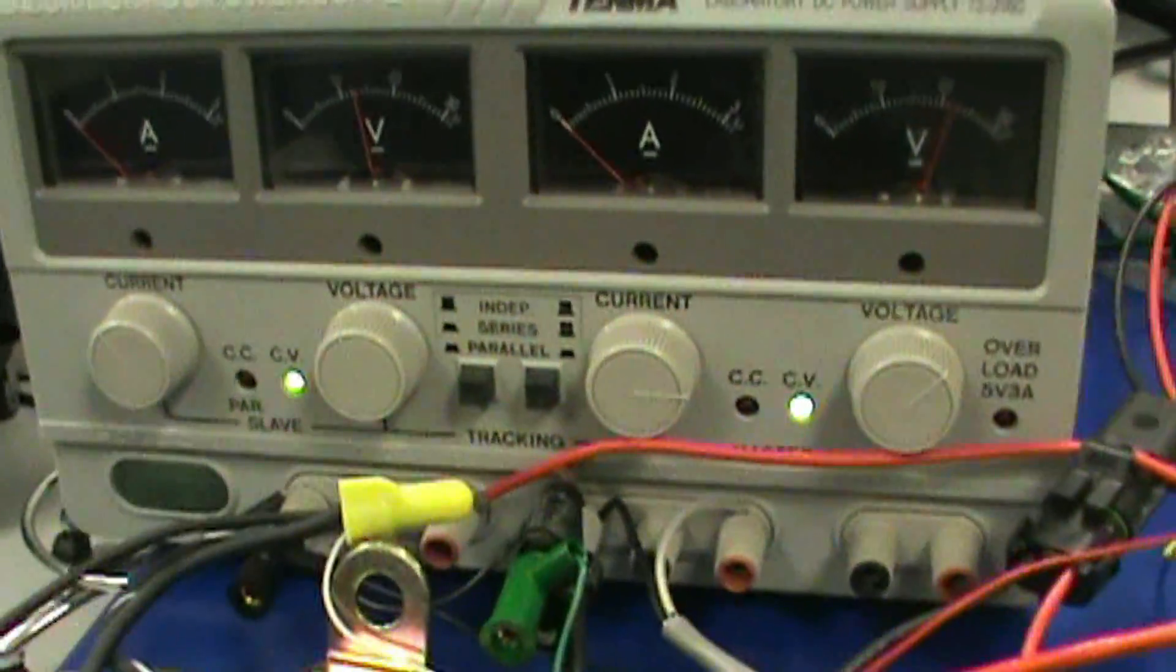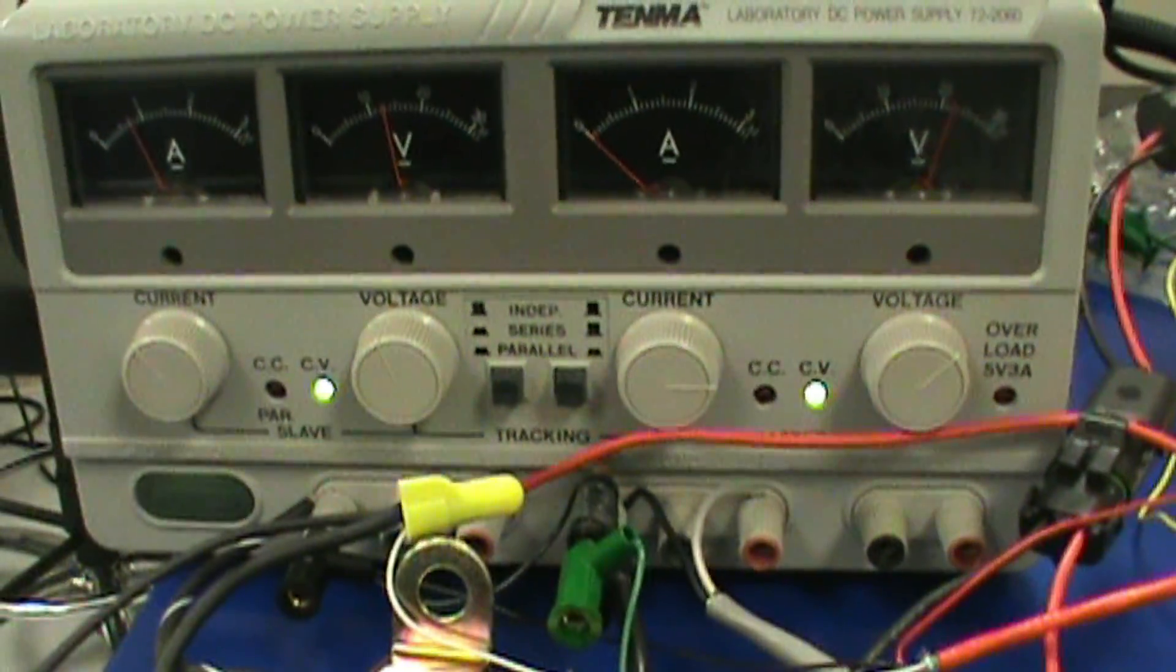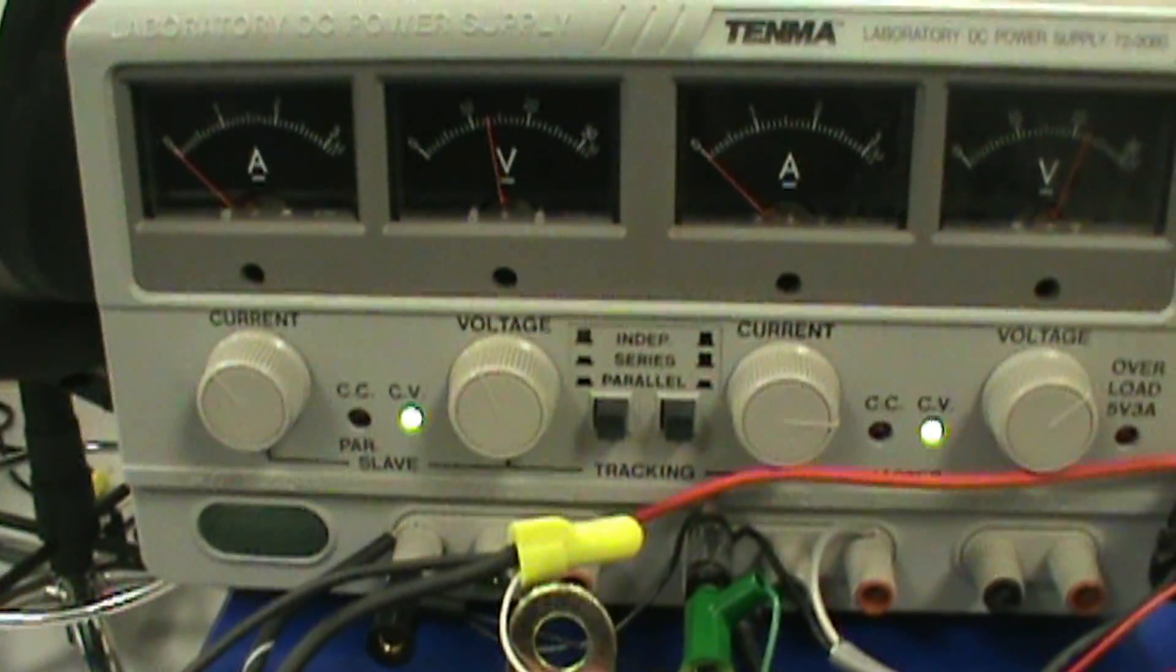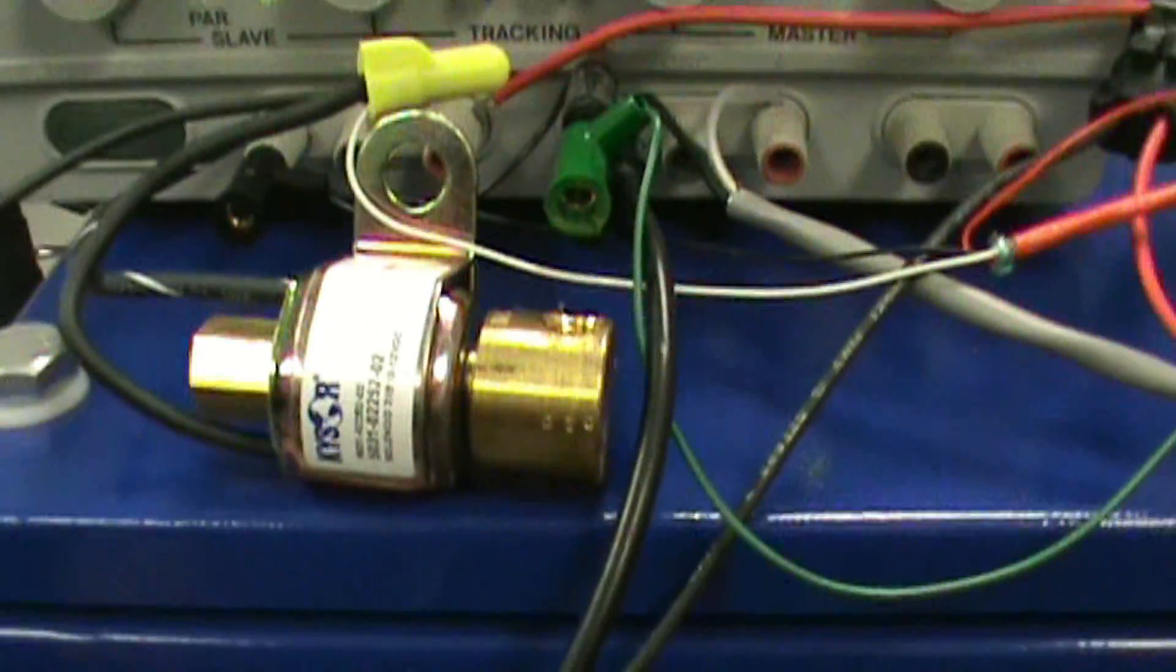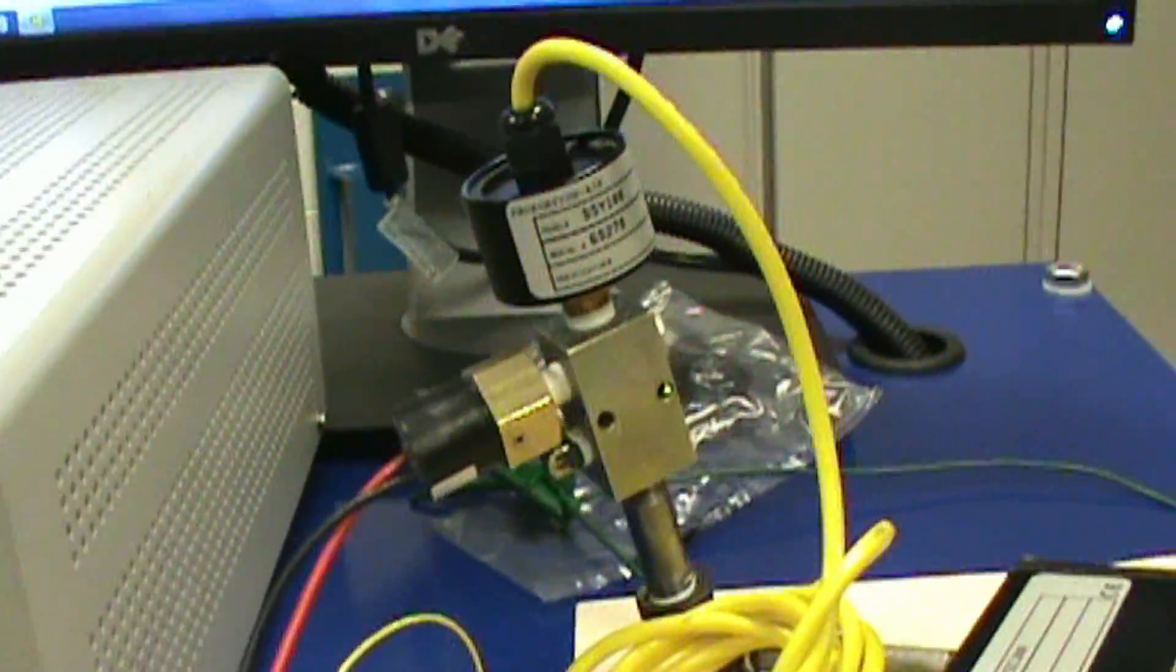We've got a power supply here. The right side is just the 24 volts for the proportional valve. The left side we have 12 volts that goes to the solenoid which we're using as a load off the pressure switch.